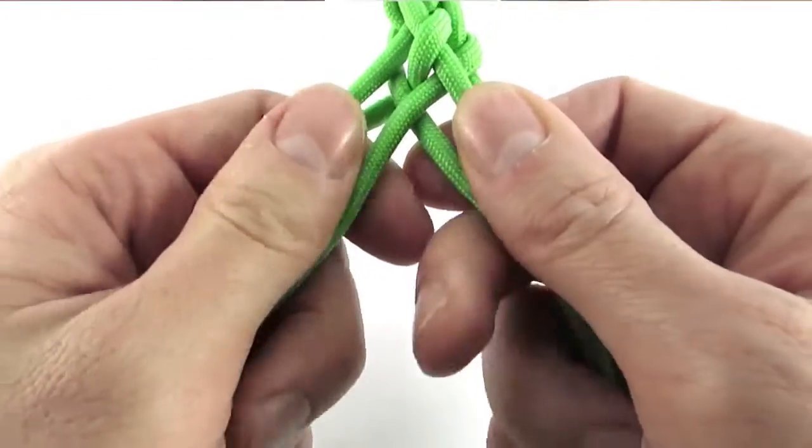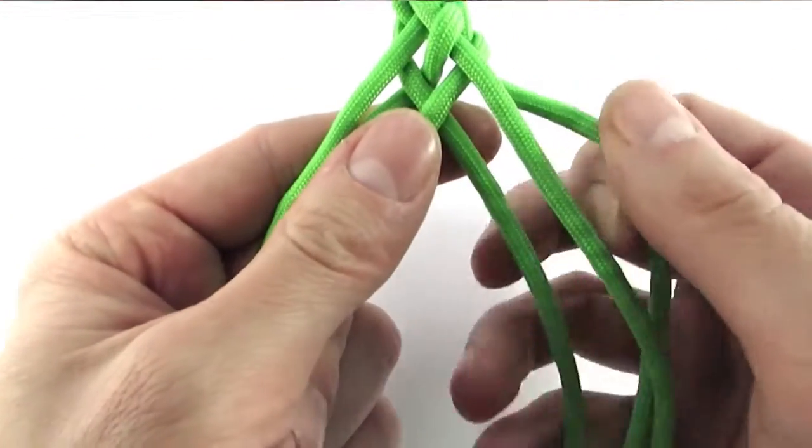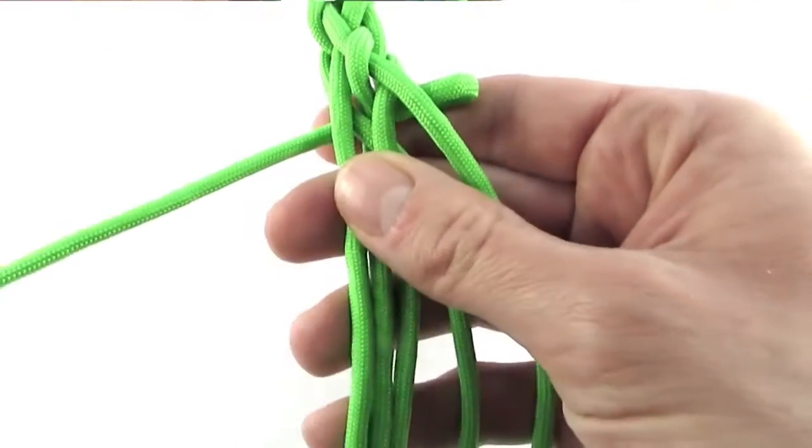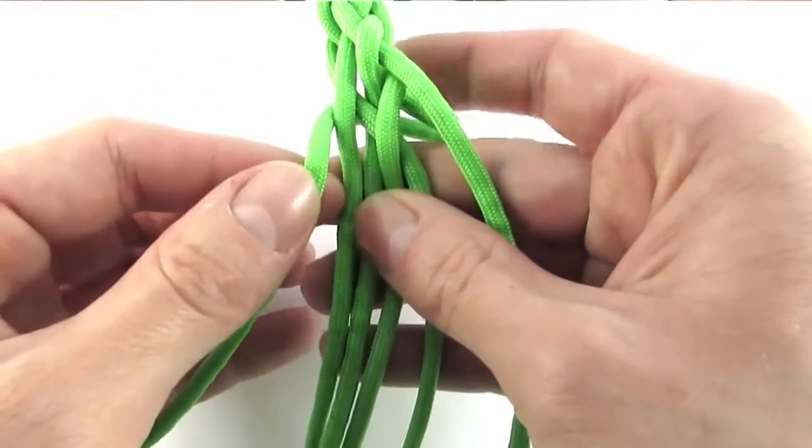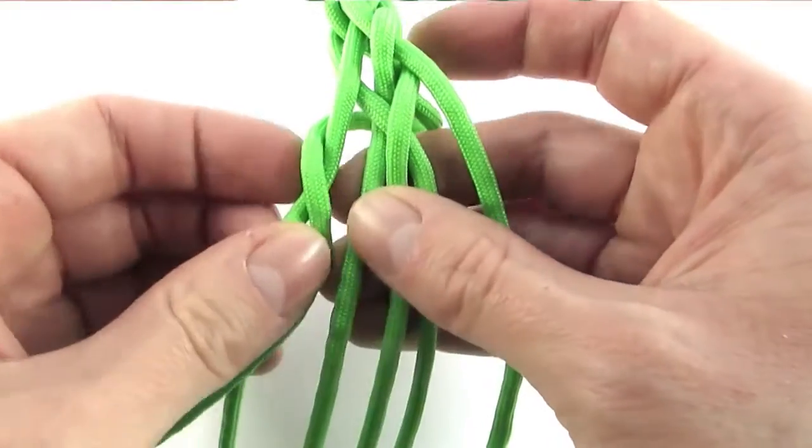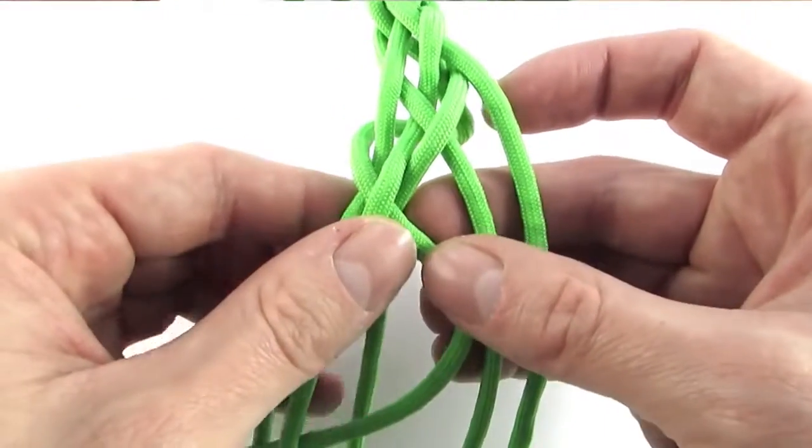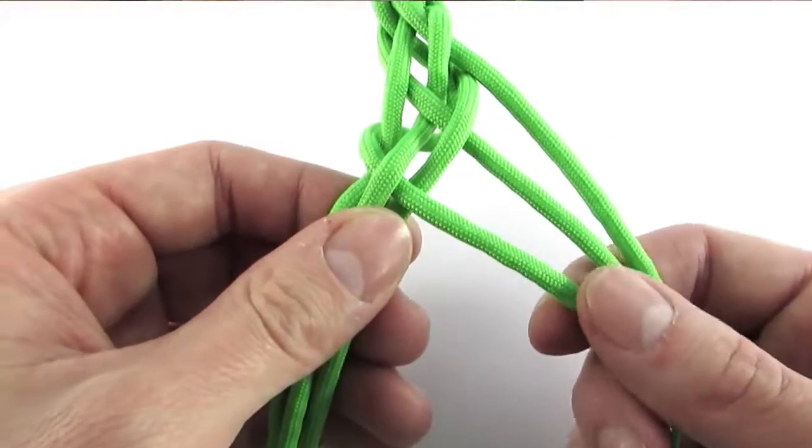We are then going to take the top right cord, again go behind the left cords, then over, under, over. Just like we did before, and then back to the right side.